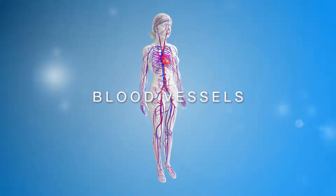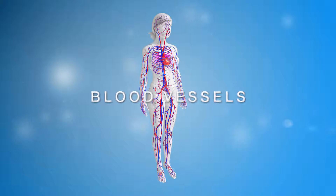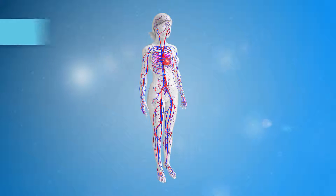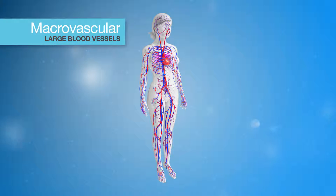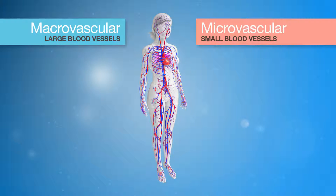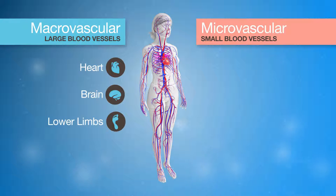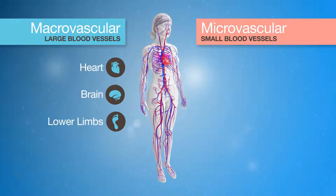In our body we have large blood vessels and small blood vessels that transport blood around the body. Damage to the large blood vessels that lead to the heart, brain and lower limbs can cause diabetes complications including heart attack, stroke, or affect blood flow to the extremities, in particular the legs.